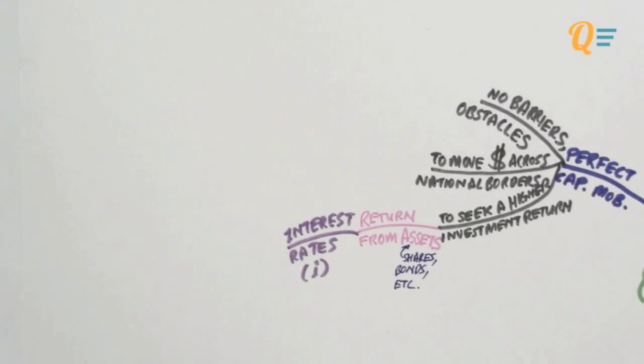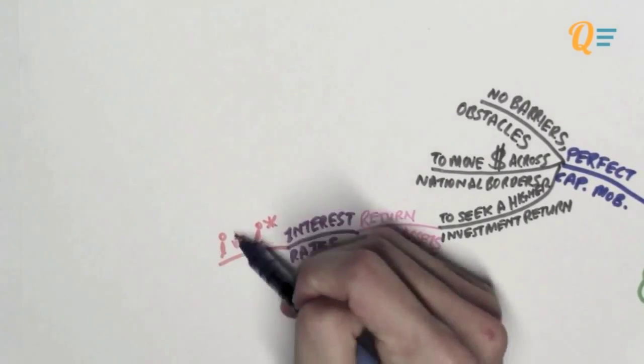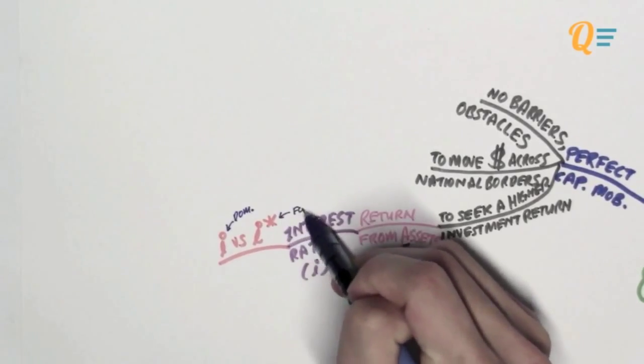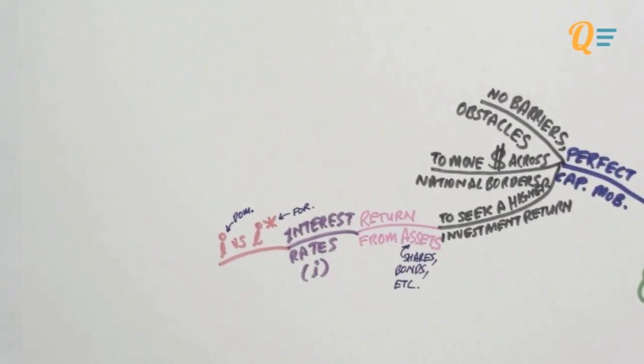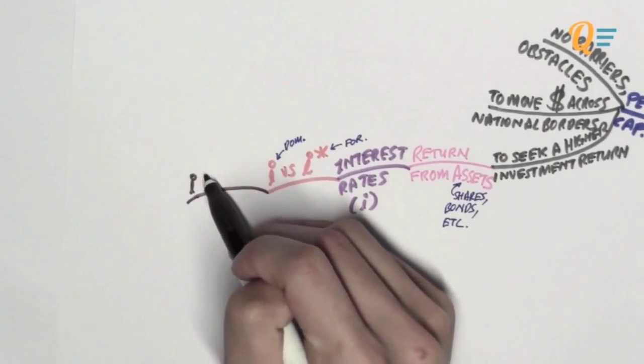And yes, these are the interest rates that you see on your ISLM model. So you have got I and you have I star. So I here actually refers to the domestic level of interest rates and I star refers to the foreign level of interest rates. So it's basically the interest rates that are present in other countries, in the foreign countries.